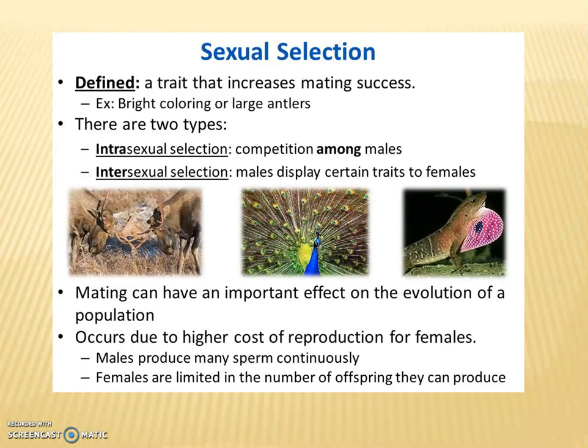In intrasexual selection, males first compete for resources and then there is selection. In intersexual selection, males display certain traits to females. Mating can have an important effect on the evolution of the population. It occurs due to the higher cost of reproduction for females. Males produce many sperm continuously, while females are limited in the number of offspring they can produce.